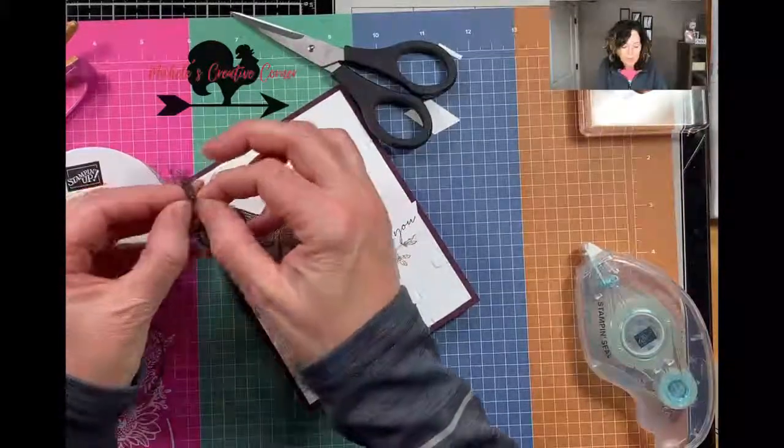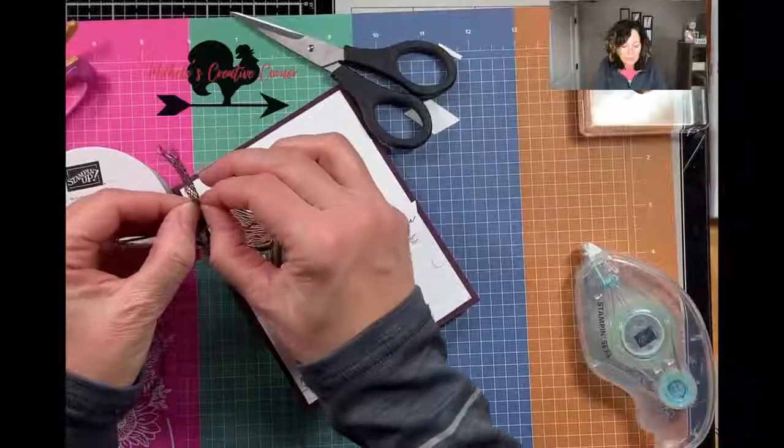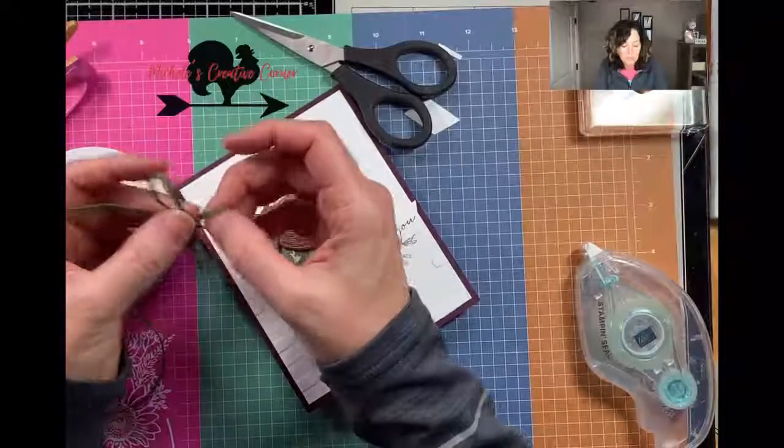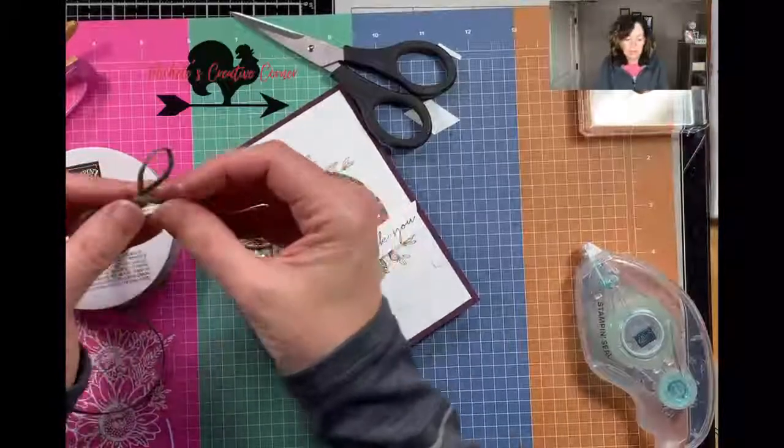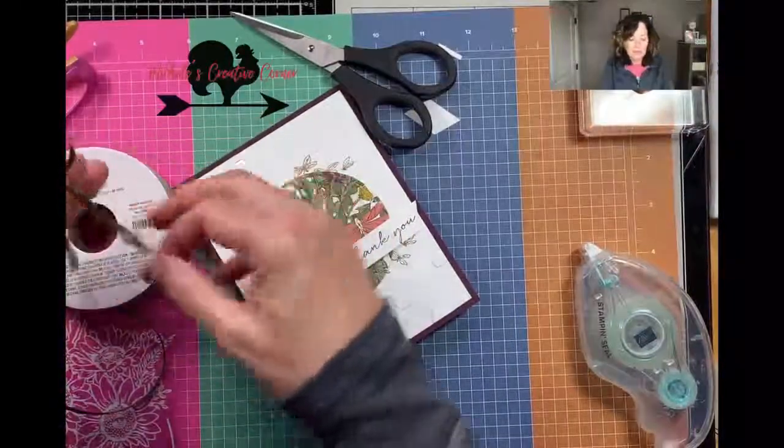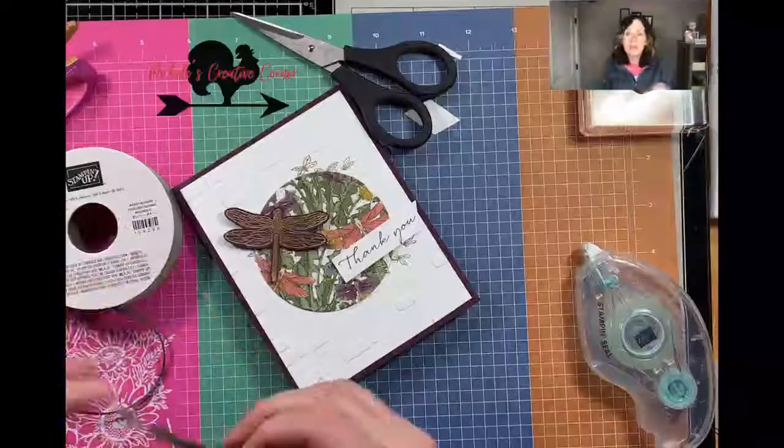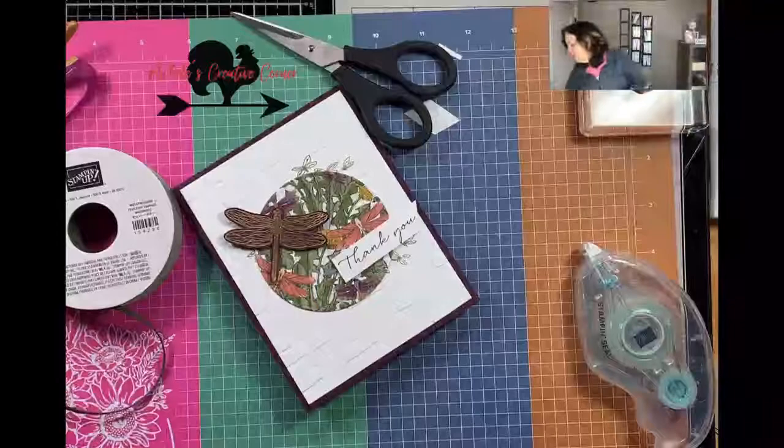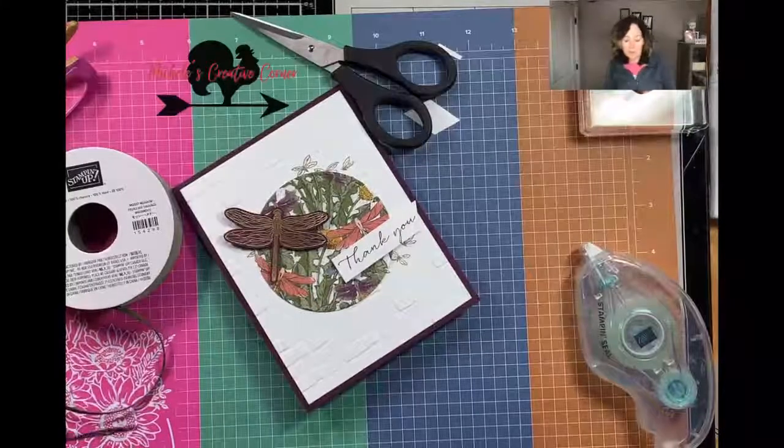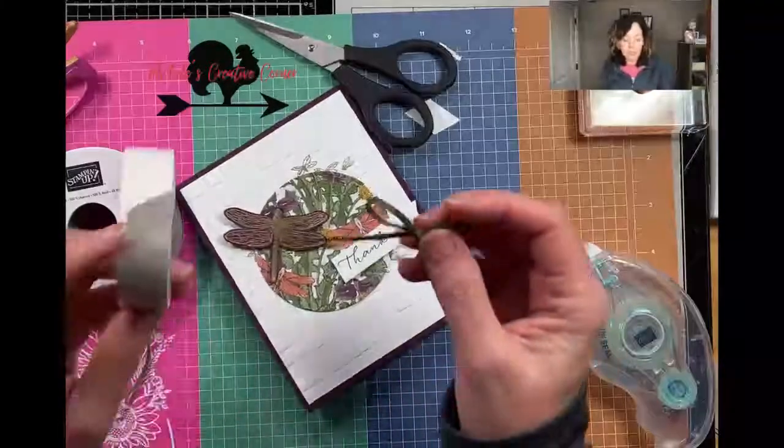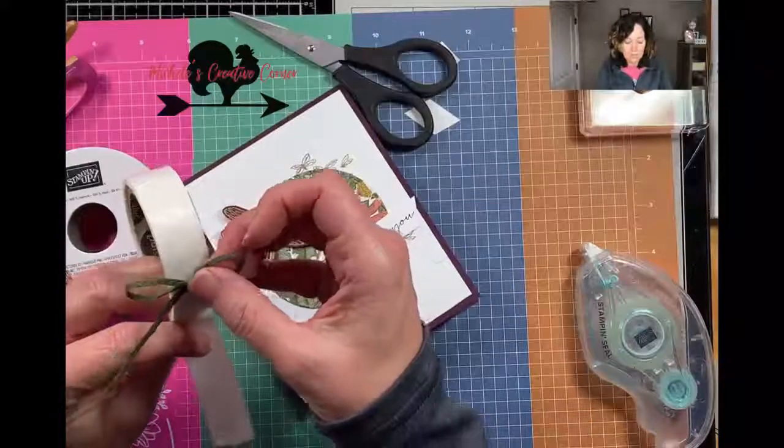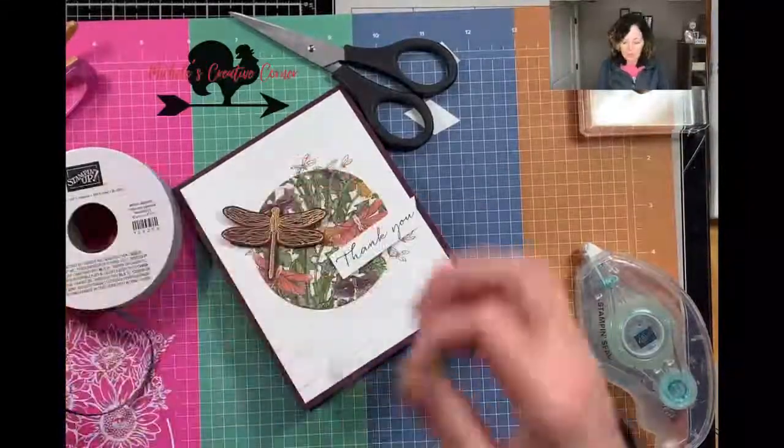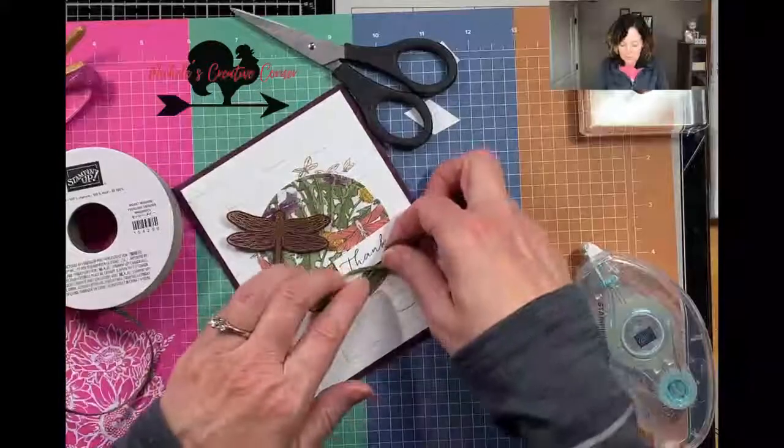Tonight at my team meeting we will do some stamping. I mentioned we're going to use the Well Suited bundle. These are masculine cards that we're making tonight, and we are making masculine cards in card club in May. The last Saturday of May will be a Well Suited card club, so mark your calendars for that.